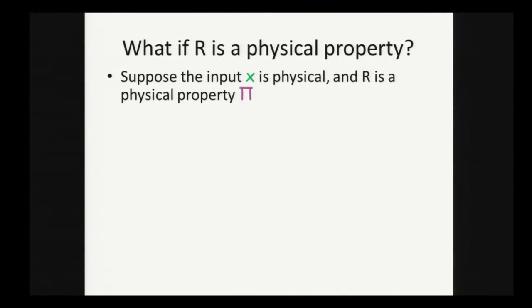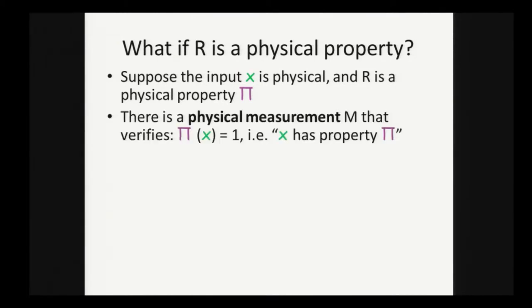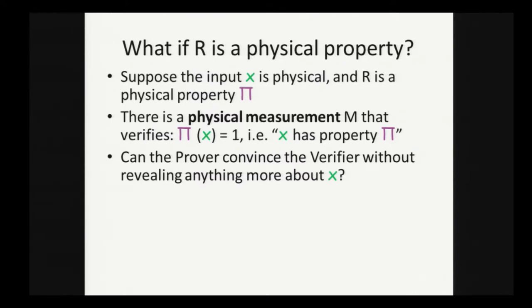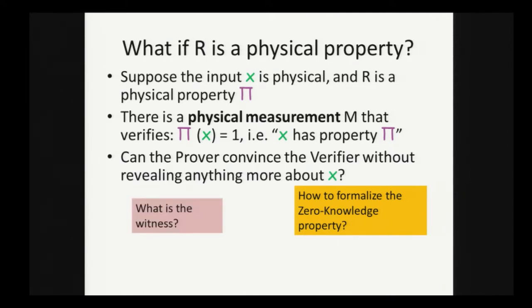So what if r is a physical property? Suppose the input x is physical and we have a physical property we call pi, and there's some physical measurement m that verifies x has this property pi. Can the prover convince the verifier without revealing anything else about the input that the property holds? The physical measurement might reveal more directly. How do we formalize what zero knowledge means in this case? And what is the witness? Is there a witness?